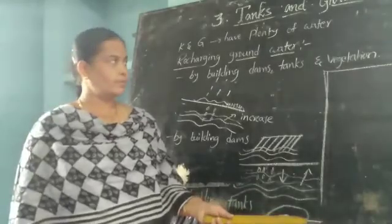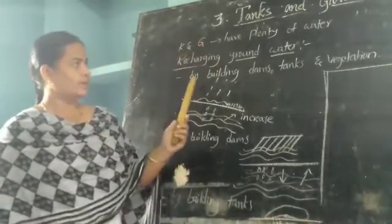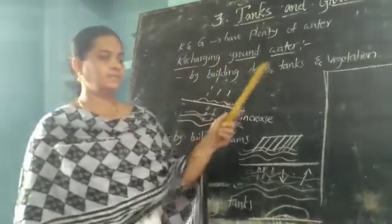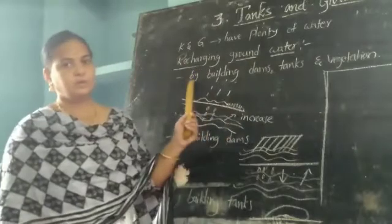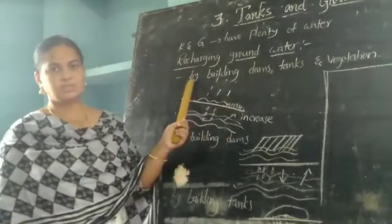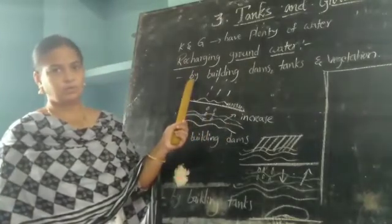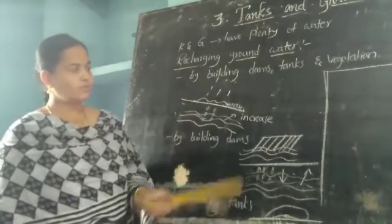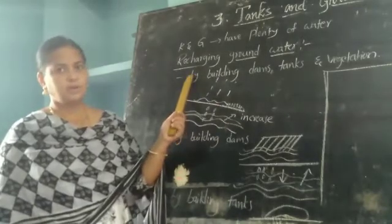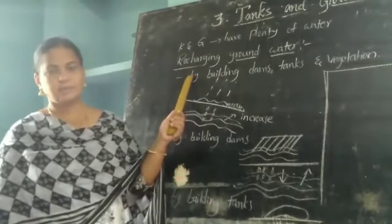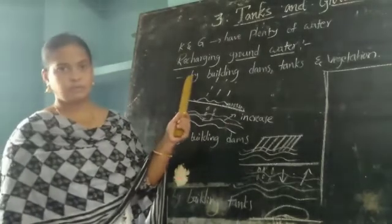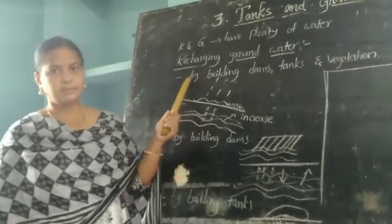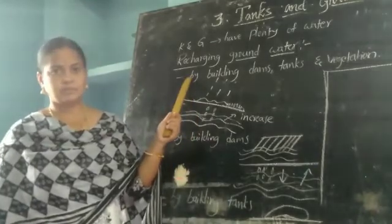So by building dams, tanks, and vegetation we are increasing or recharging groundwater. This type of project is called a watershed development project.